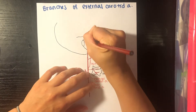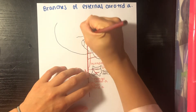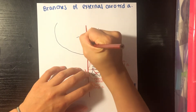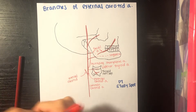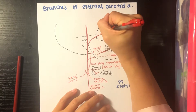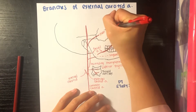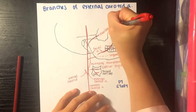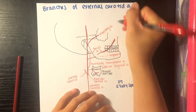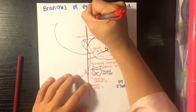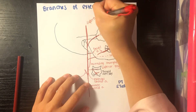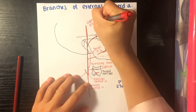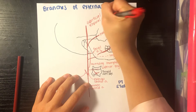Going towards the maxilla, we have one branch, and then another one going straight up to that temporal bone. To the right is your maxillary artery, and towards the top is your superficial temporal artery.